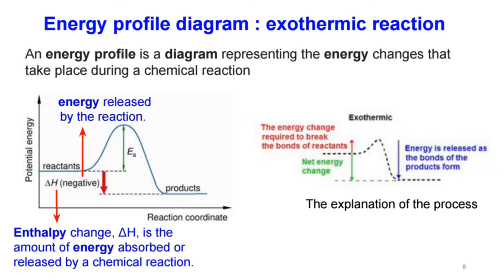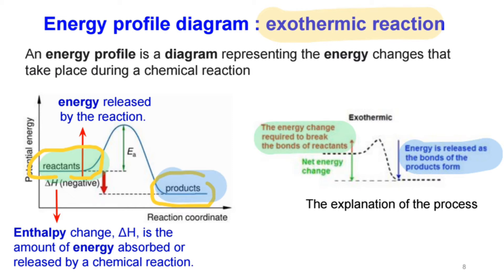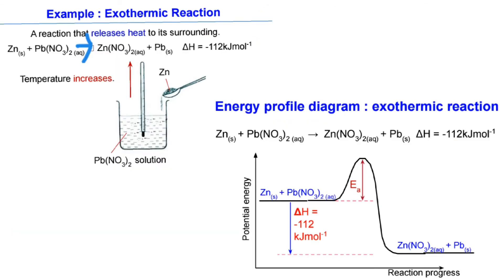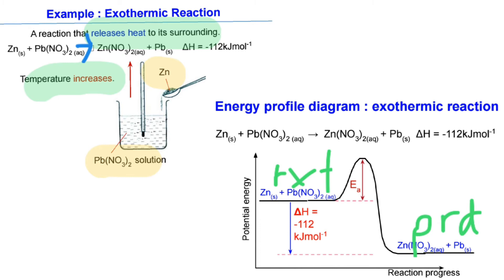The energy profile diagram for an exothermic reaction shows that the potential energy of reactants is higher than the potential energy of products. This is because the energy required to break the bonds of reactants is higher than the energy released in forming new bonds in the products. The enthalpy change is the energy released by the reaction. For example, when zinc metal is dissolved in lead nitrate solution, the temperature increases, meaning heat is released to the surroundings. The difference between the energy of products and reactants is the enthalpy change — the amount of energy released for the reaction to occur.